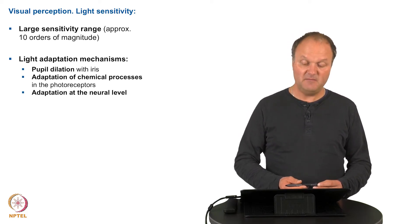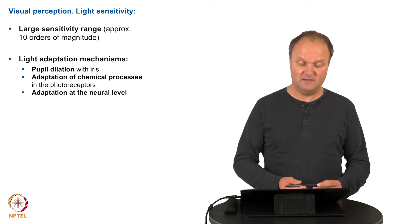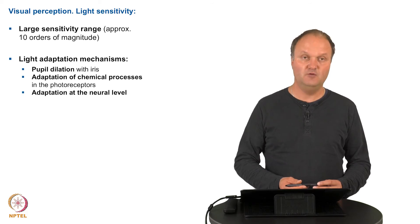In addition, there are chemical processes happening at the level of the photoreceptors. They can cover approximately five to six orders of magnitude, but this process is relatively slow. It can take up to one hour in order to fully adapt.